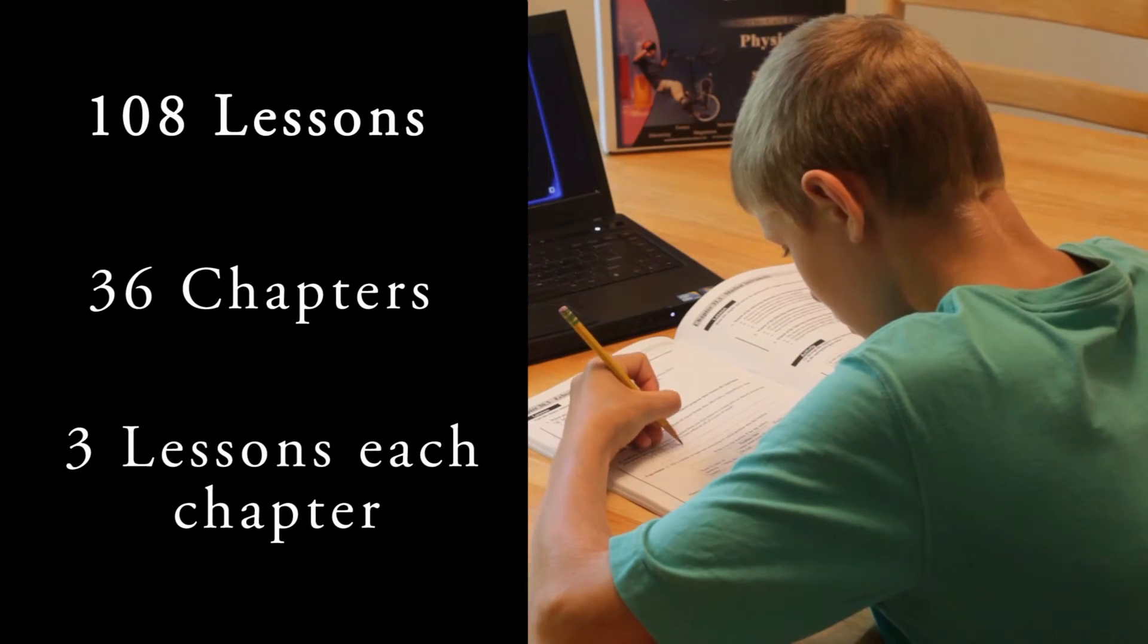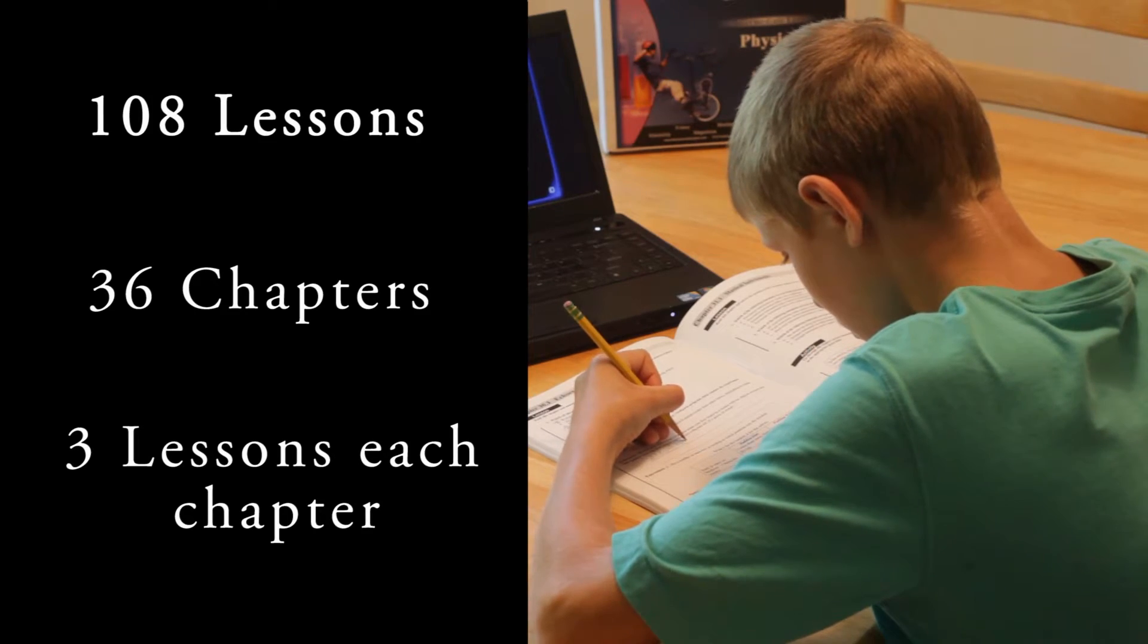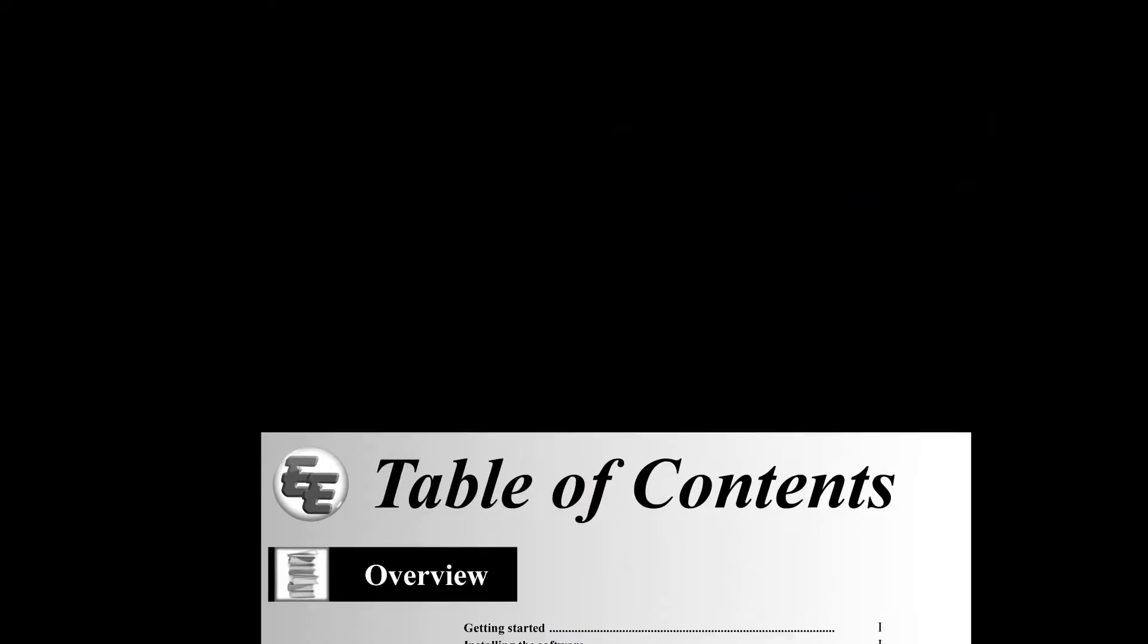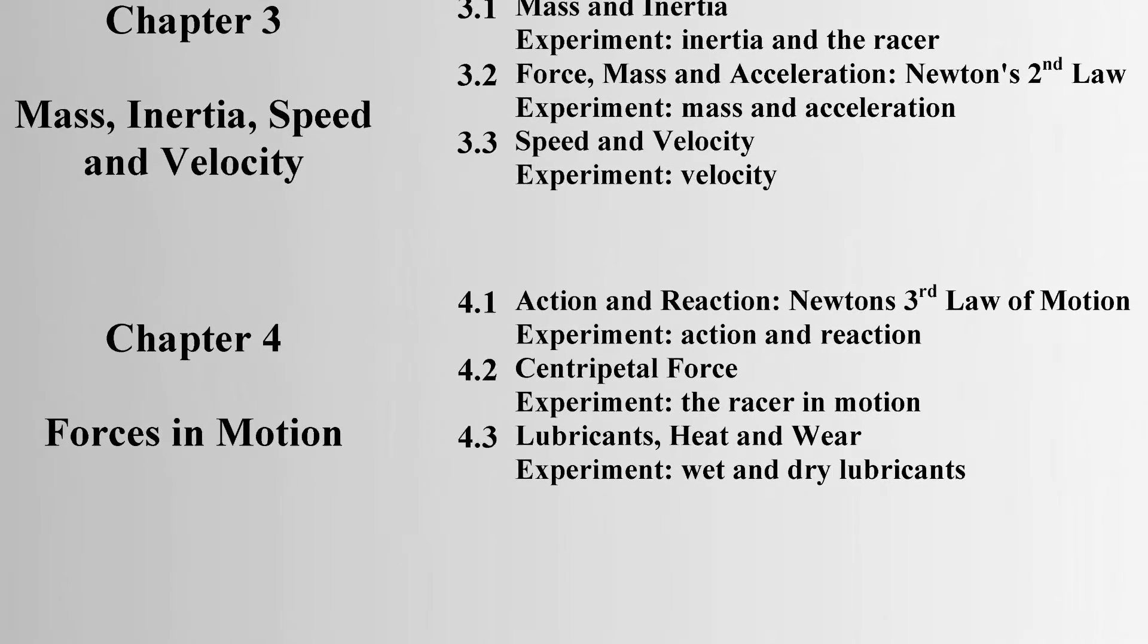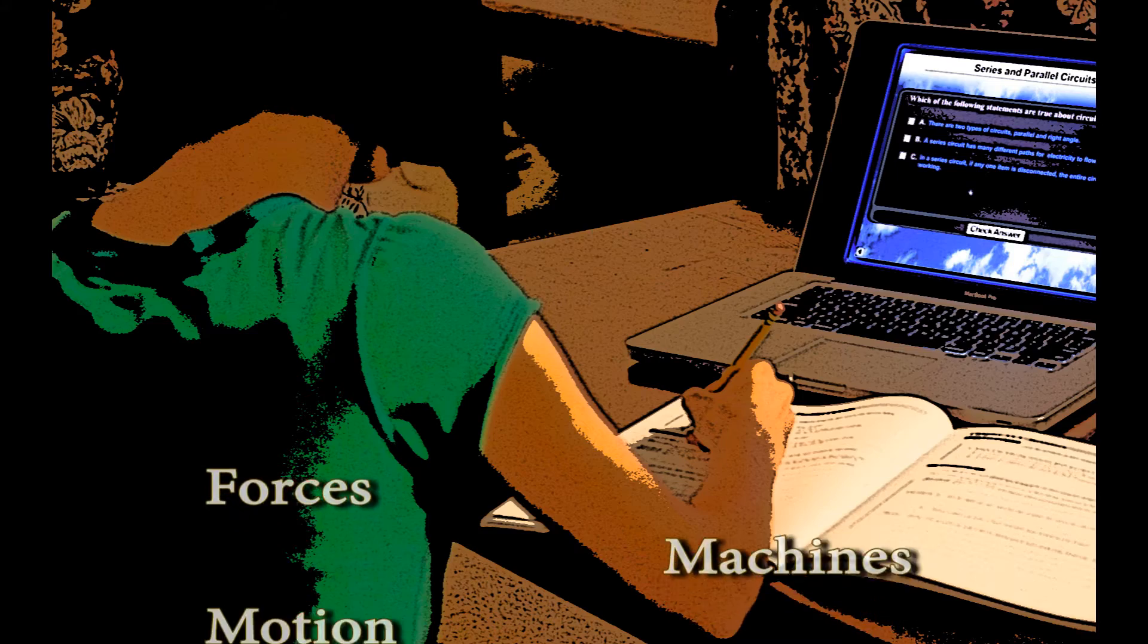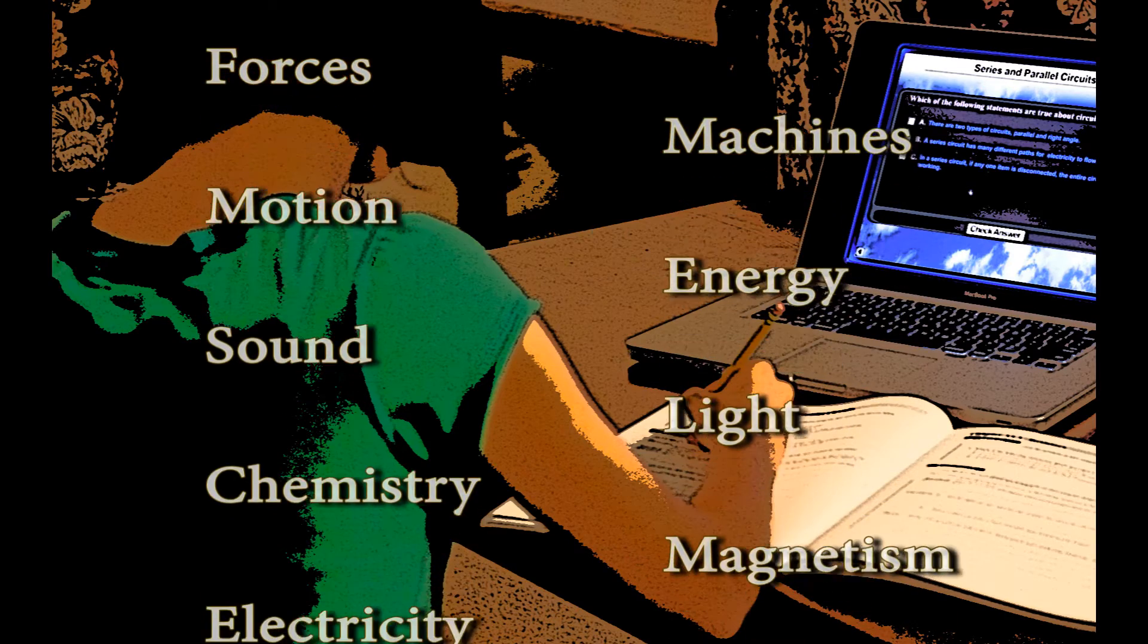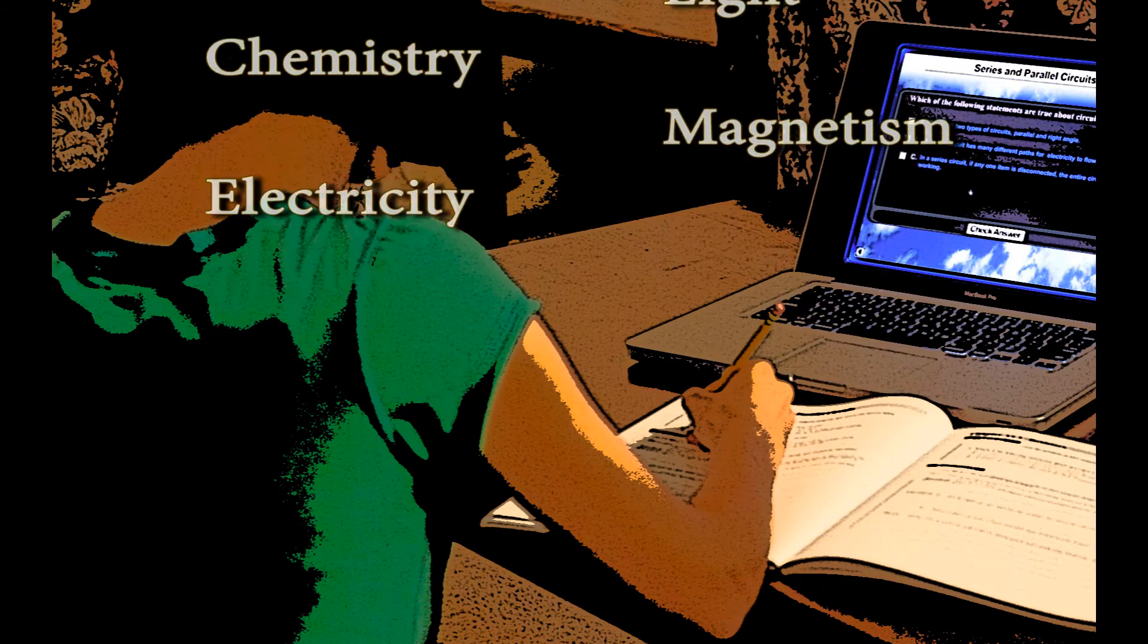The 108 lessons are broken down into 36 chapters, with each chapter having 3 lessons. So the student completes 3 lessons each week as they progress through the school year. The course covers forces, machines, motion, energy, sound, light, chemistry, magnetism, and electricity.